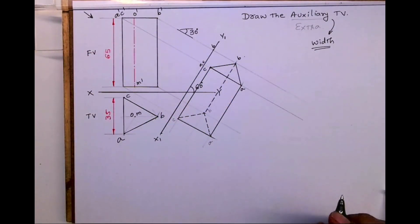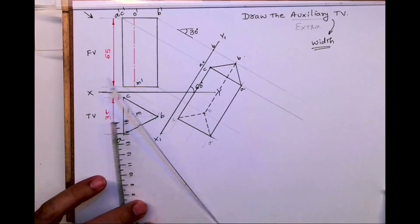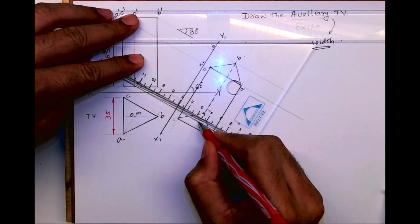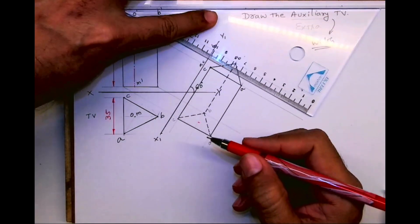Ignore that Y and that line. Now we have axis also. Now I generally don't advise to draw axis, but if you want to draw, you can draw. Now I am using red pen, so you will know the difference.